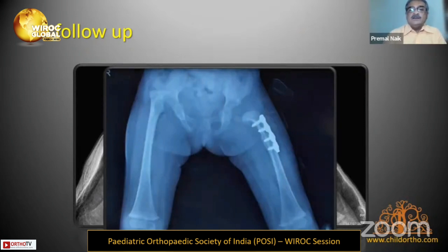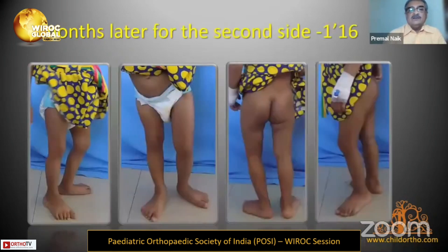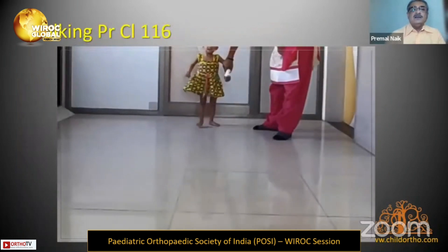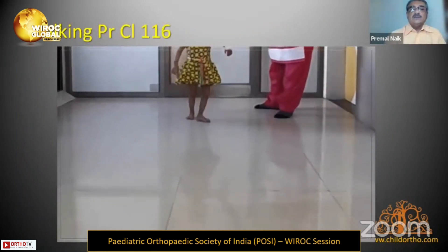This side was operated with femoral shortening. I did not do a pelvic procedure because that was not required. On further follow-up you can see the capital femoral epiphysis is now enlarging. Six months later she came for the second side; she had reasonably good movements on the operated side and was walking with a limp.